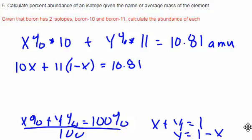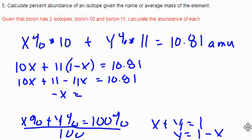So if I go ahead and distribute through, I really have 10X plus 11 minus 11X equals 10.81. So negative X is going to equal 11 minus 10.81 or 0.19, and that's going to be negative.